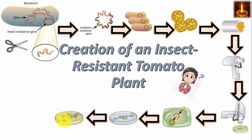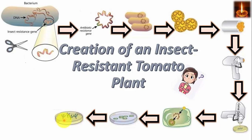These cells are then transferred into media containing plant growth factors to grow the plant cells. As a result, we obtain an insect resistant tomato plant.